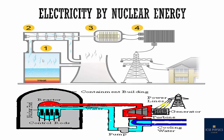Fission, as the word suggests, is dividing. The process of dividing a nucleus is called nuclear fission. Uranium is a non-renewable source of energy and, like fossil fuels, it cannot be replaced once it has been used up.